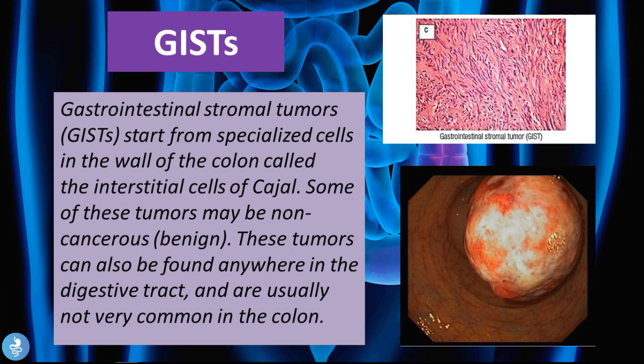Gastrointestinal stromal tumors (GISTs) start from specialized cells in the wall of the colon called the interstitial cells of Cajal. Some may begin as benign and can be found anywhere in the digestive tract; they are not commonly found in the colon.